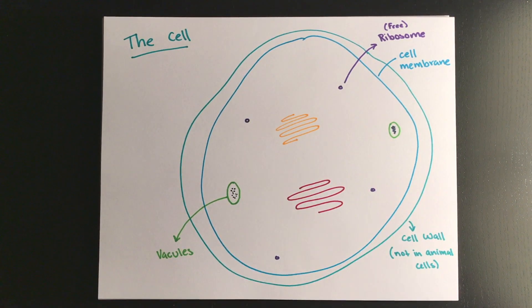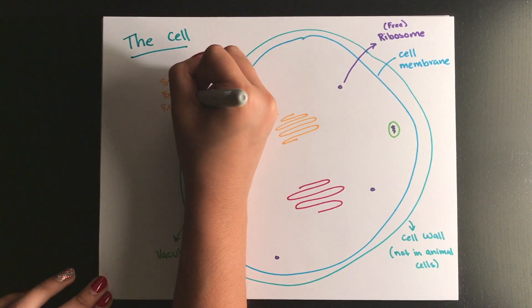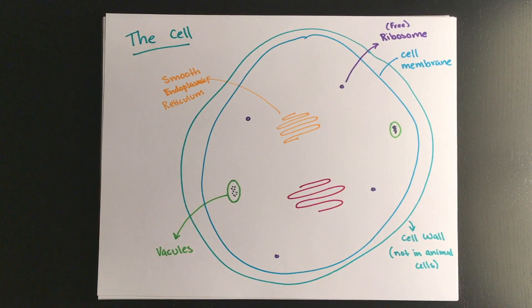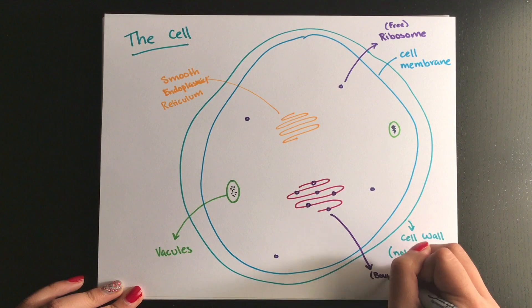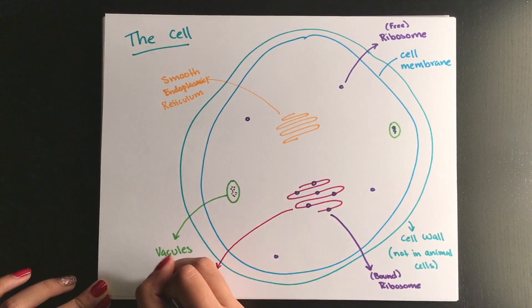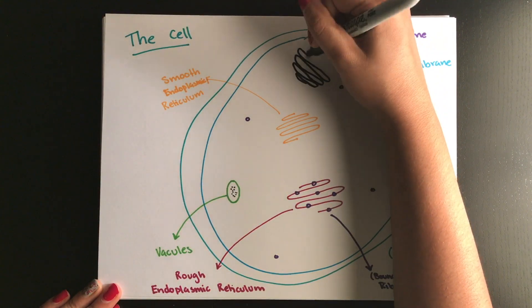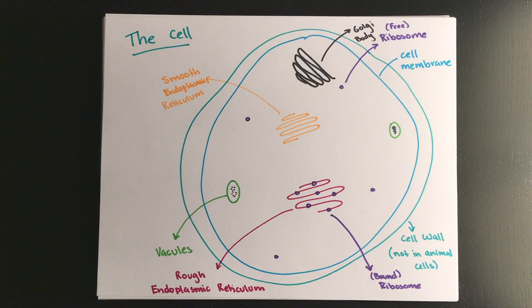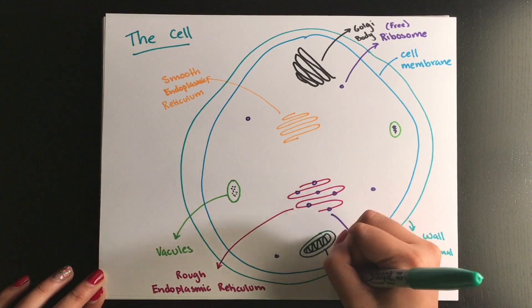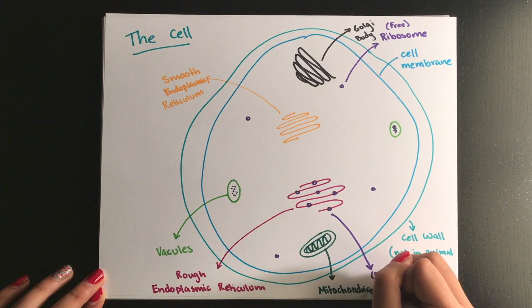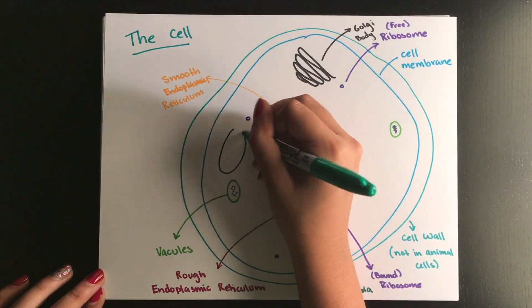The smooth endoplasmic reticulum is used to transport material around the cell, and the rough endoplasmic reticulum transports primitive proteins that will become either membrane or secreted proteins later on. The Golgi apparatus sorts and packages proteins, and the double-membrane-bound structure, which is the mitochondria, performs cellular respiration, has its own ribosomes, its own DNA, and produces ATP.